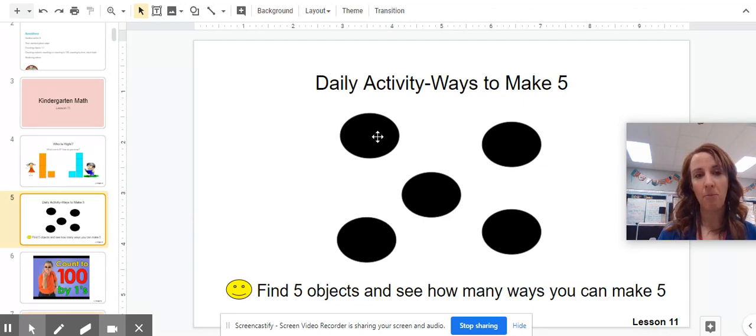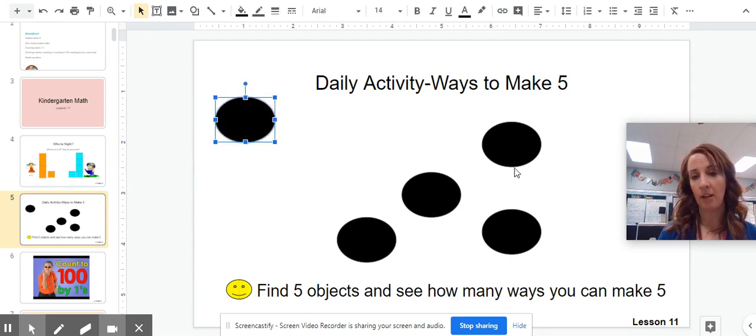What will happen if I move one dot over here? If you knew that one dot and four more dots over here made five, then you were correct.